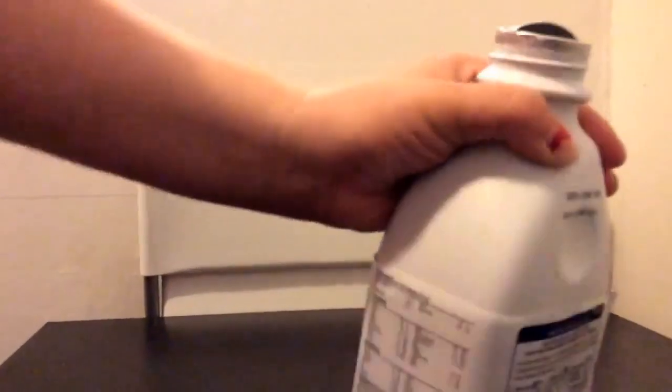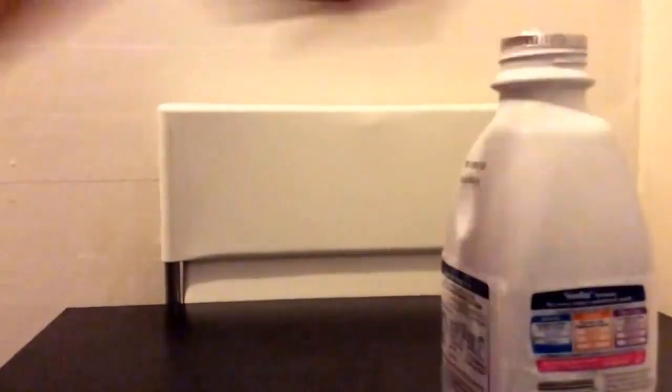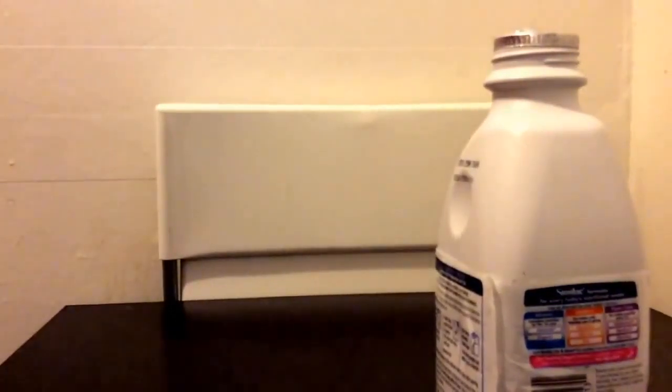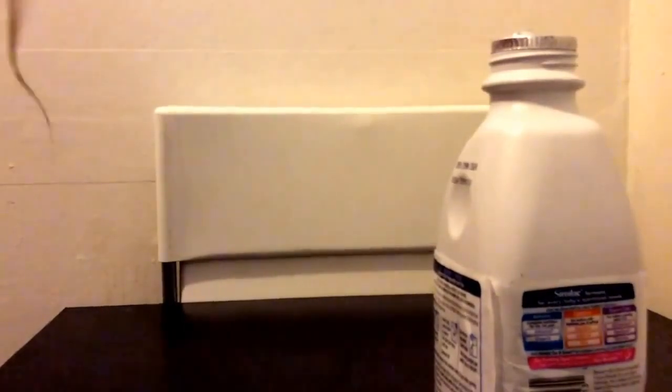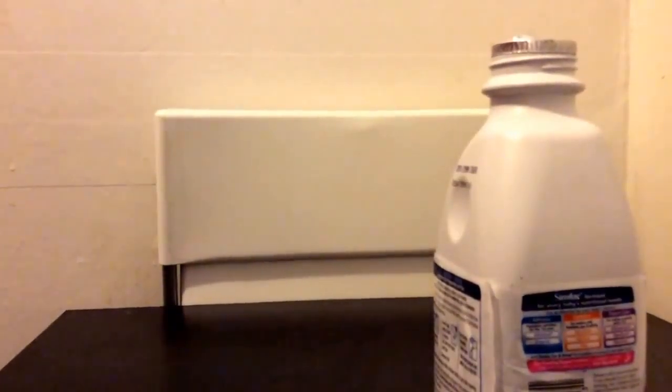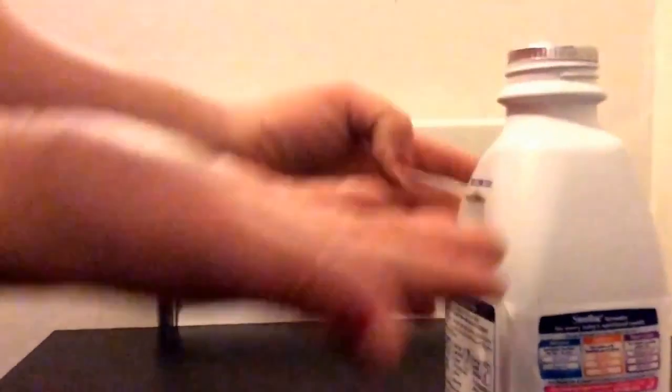Now what it actually says on the bottle is to shake, clean the top, invert the cap, press down, turn the cap a half turn, and then remove the foil. It says to remove the foil.